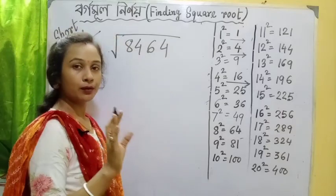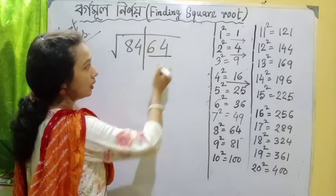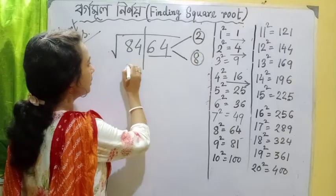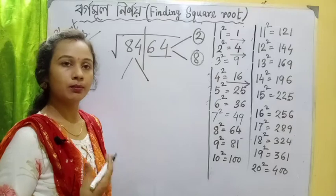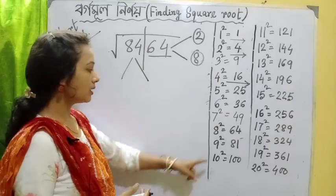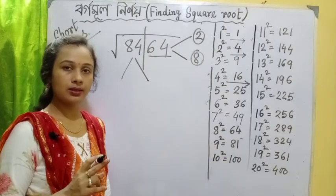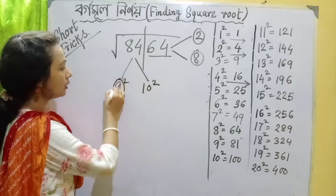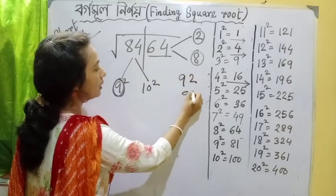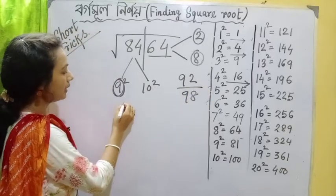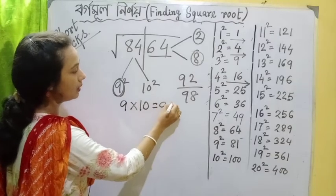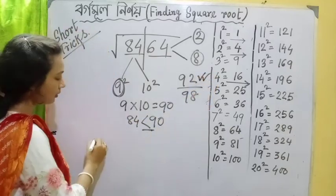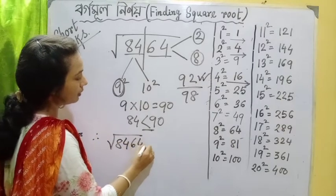Another example: 8464. First step, separate and separate. 84. 9 squared is 81 and 10 squared is 100. That is 84 — between 81 and 100. We choose 9. We choose 92. 9 into next number 10 is 90. 84 is less than 90. We choose the lesser number. Root 8464 is equal to 92.